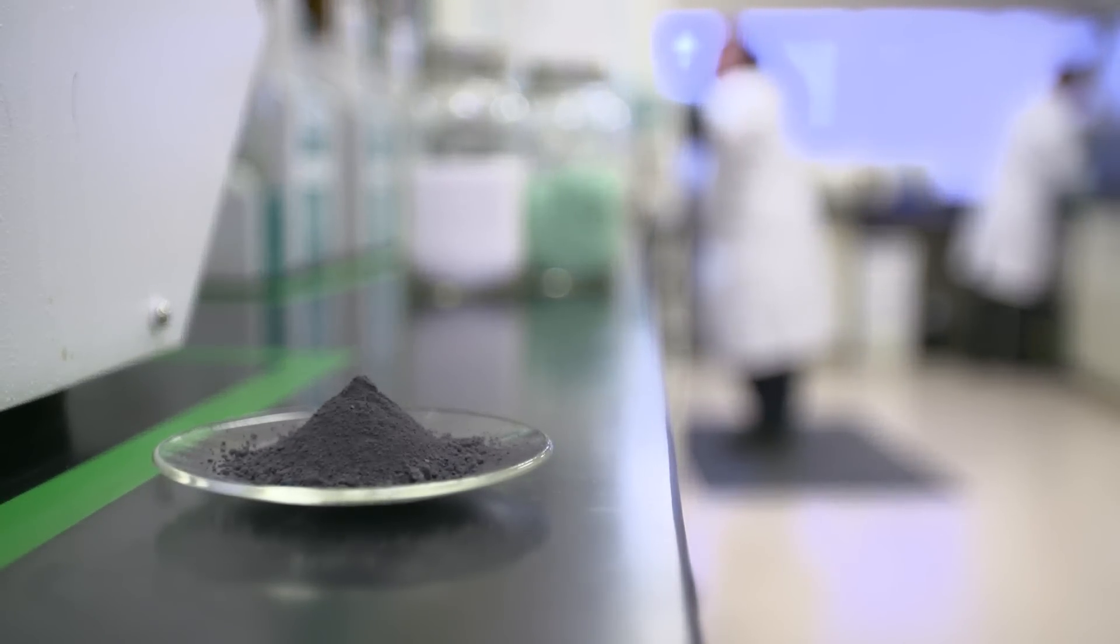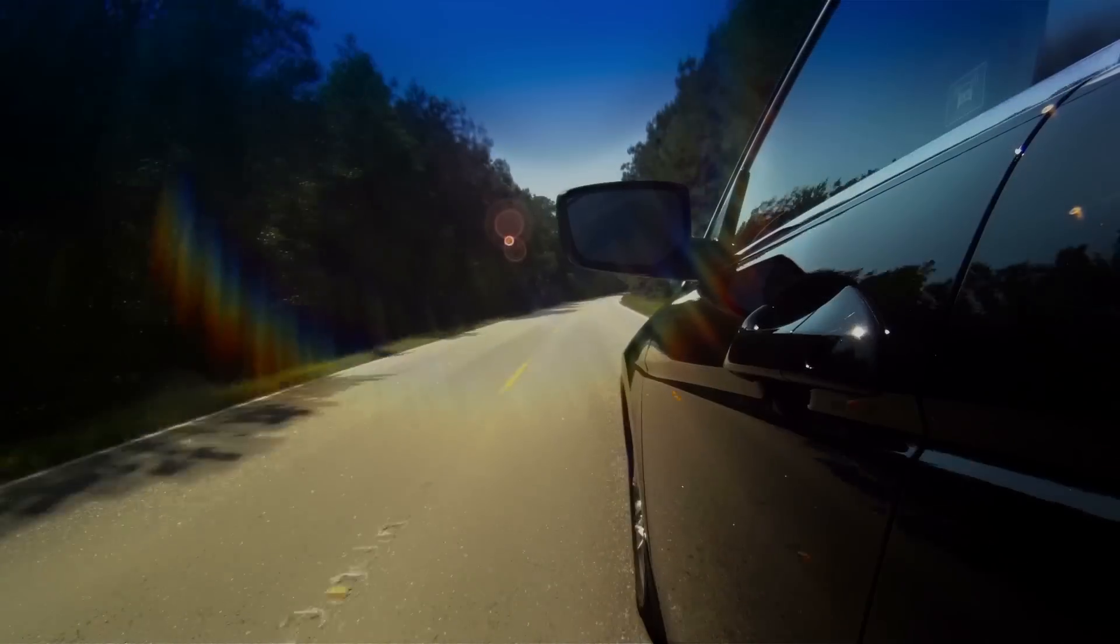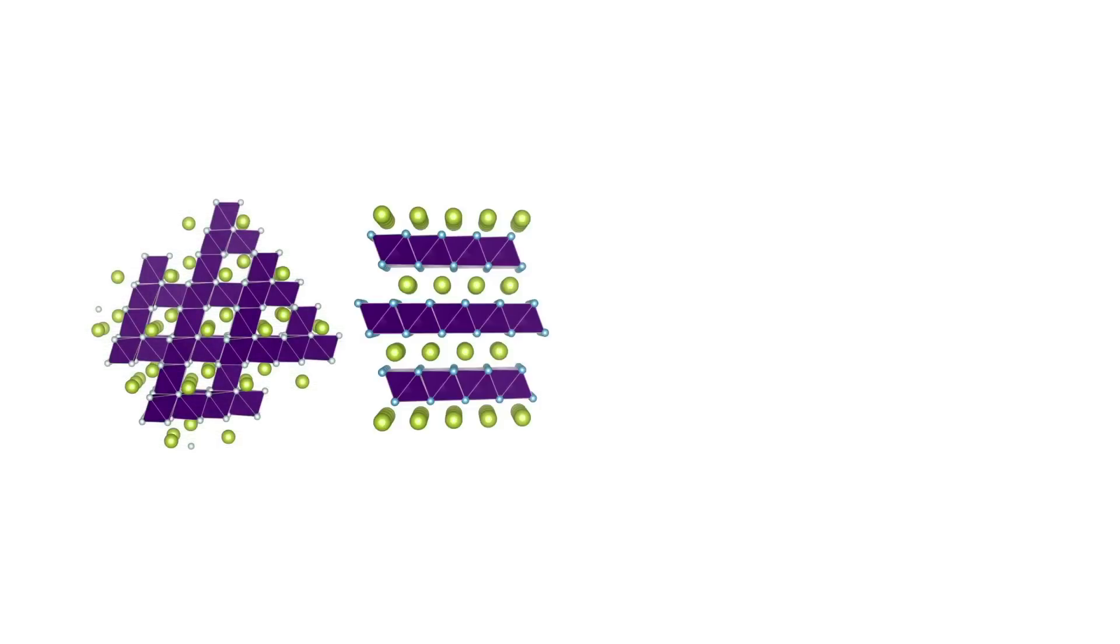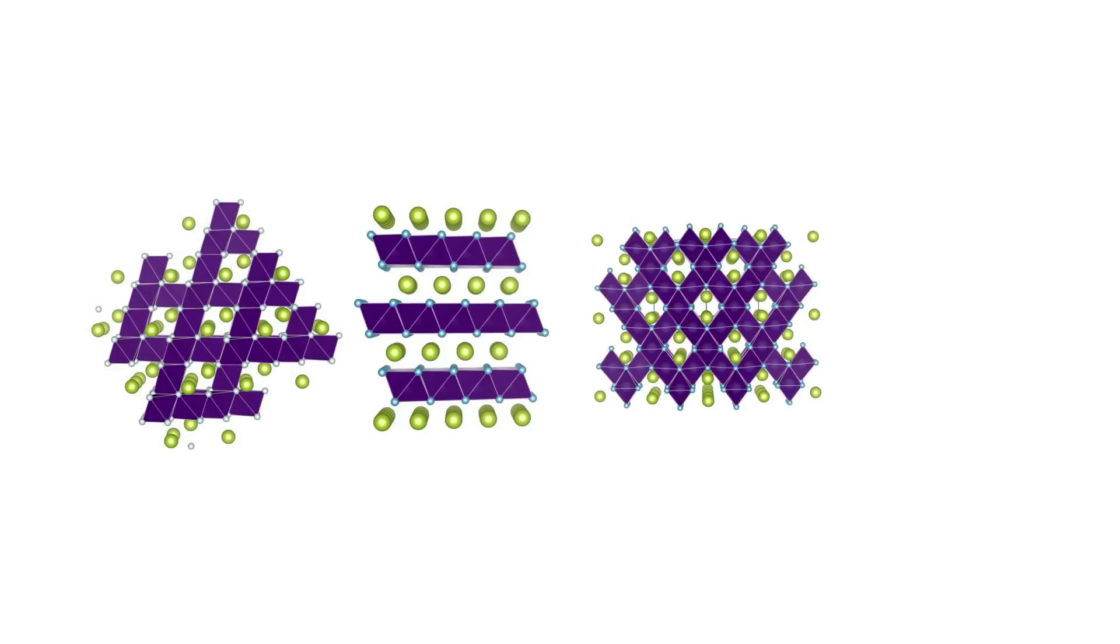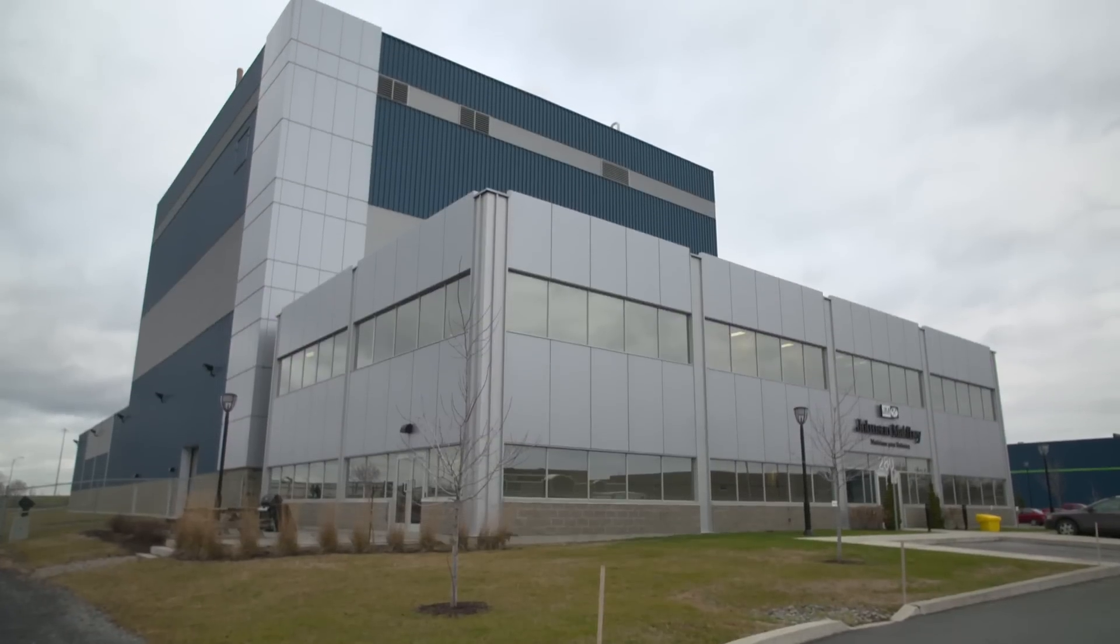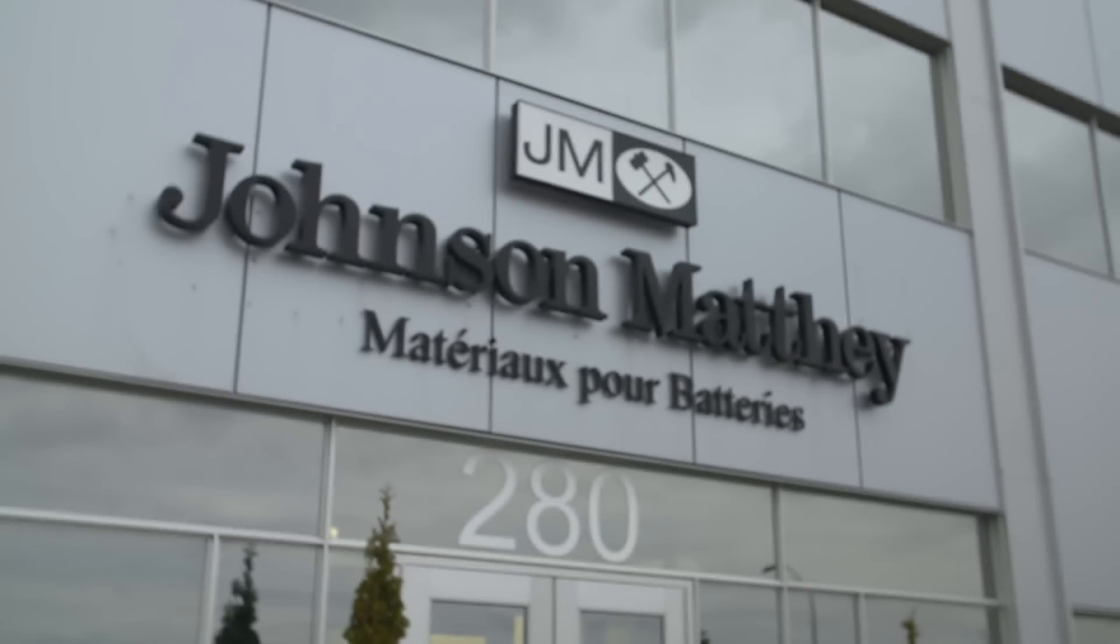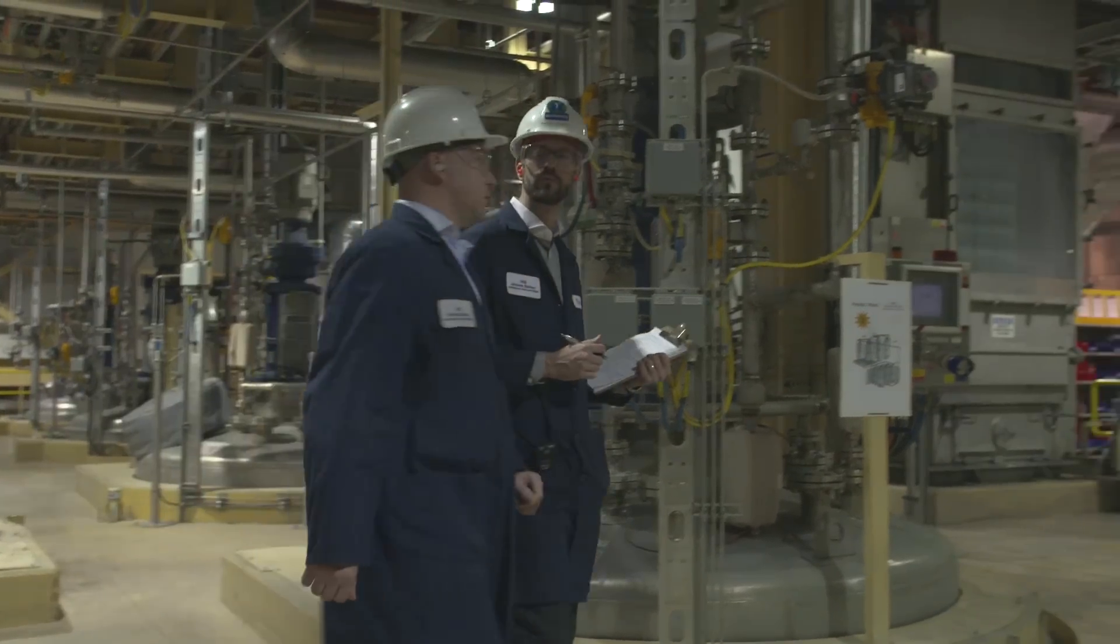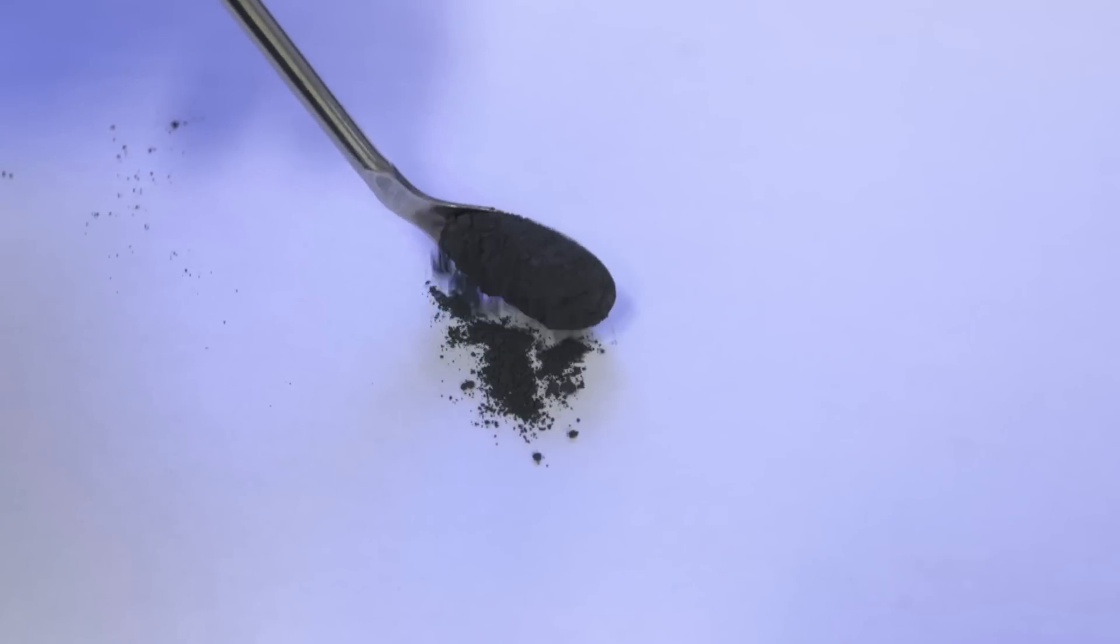The cathode material in the battery cell is a key component in providing the electricity needed to power a vehicle. And there are a number of different classes of cathode material, each suited to a particular application. At Johnson Matthey's facility near Montreal, Canada, the company is manufacturing one particular type of cathode material, lithium ion phosphate or LFP.